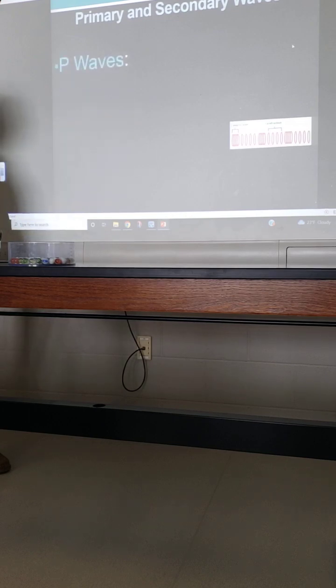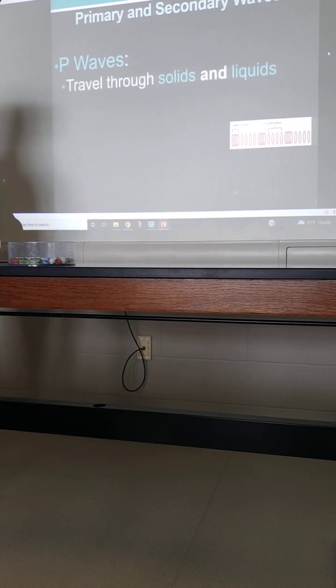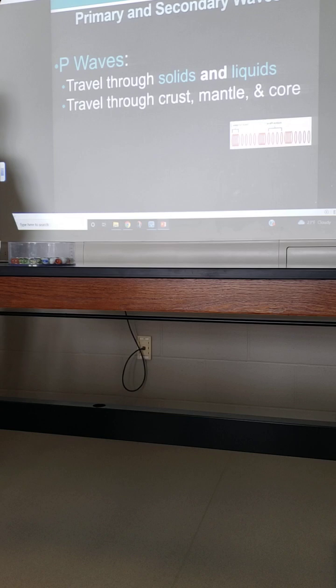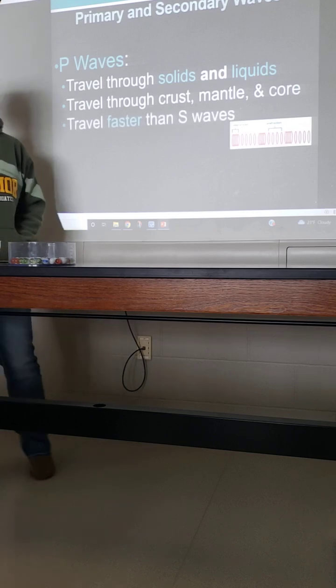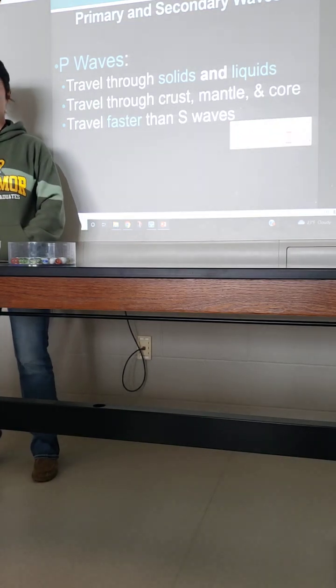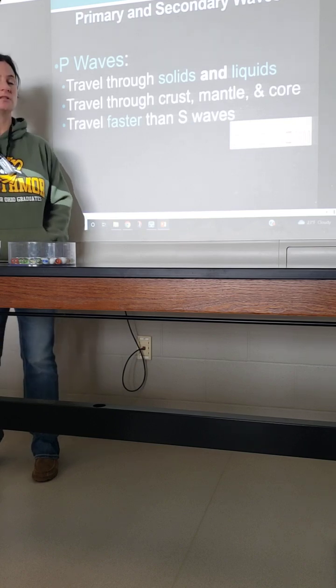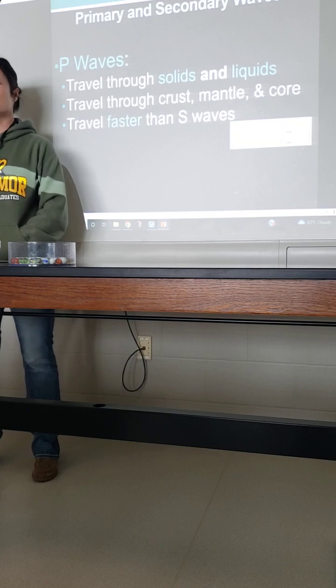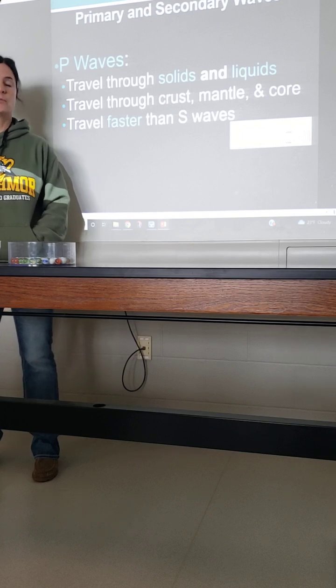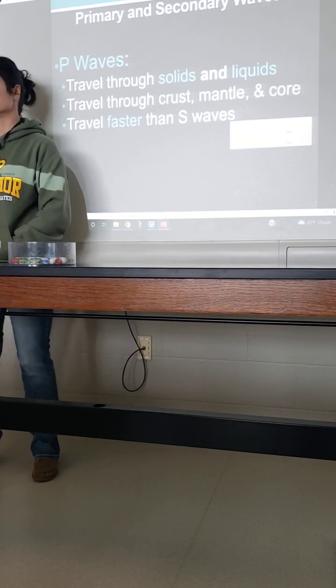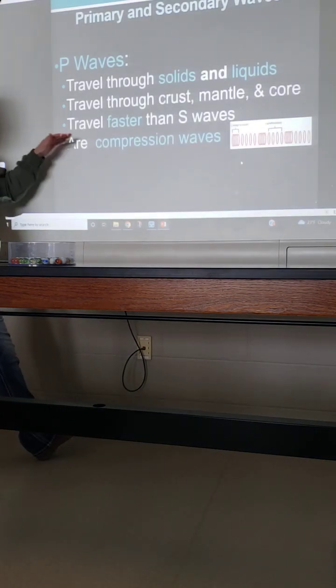And so the P waves, there's going to be some characteristics that you're going to need to know. The P waves are going to travel through solids and liquids. So that means they can go through every layer. And that means that they can travel through the crust, the mantle, and the core. They are going to be faster. Don't memorize this. Think about it logically. If they get there first, if they reach the seismograph station first, they were faster.